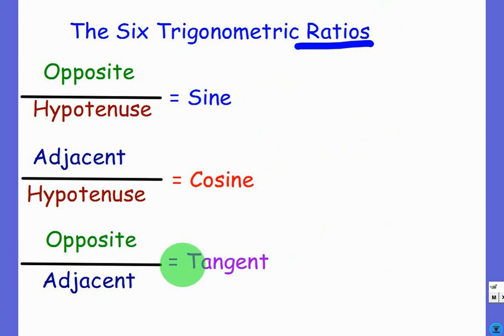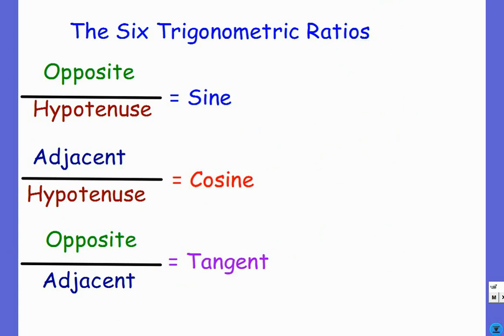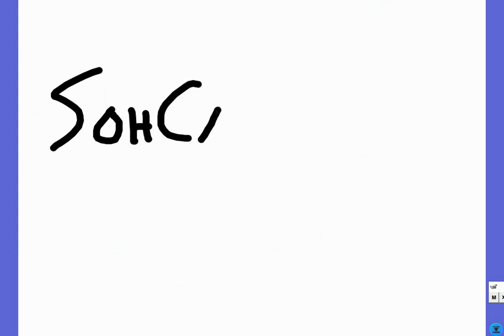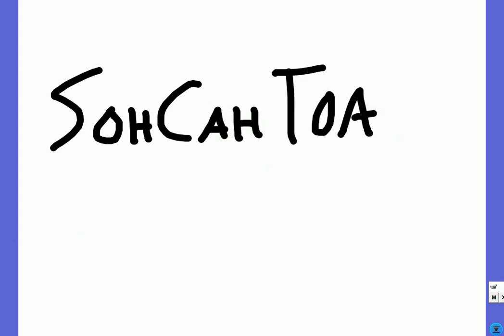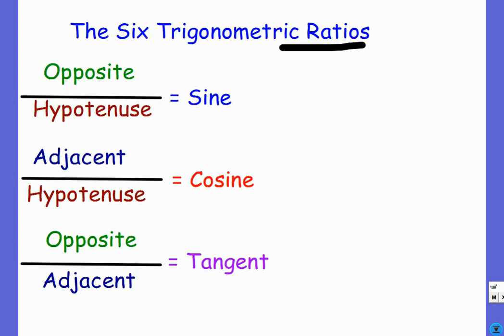Those are your first three trig functions. There's a slogan we use — SOH-CAH-TOA. It means: sine is opposite over hypotenuse, cosine is adjacent over hypotenuse, and tangent is opposite over adjacent. It's a single word that helps you remember all three of those.